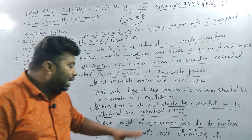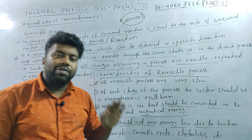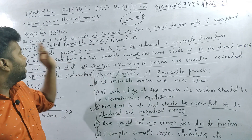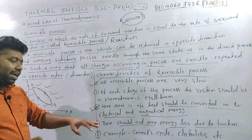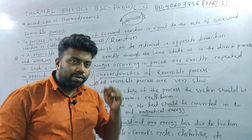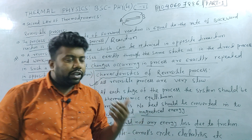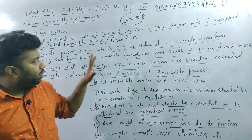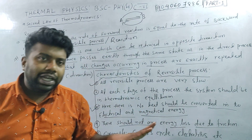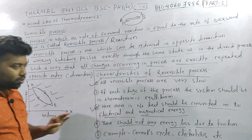For example, the Carnot cycle and electrolysis are the best examples of a reversible process. The Carnot cycle is a long and important question. If you want to post the video and note it down, you can prepare the notes.